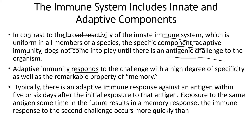Adaptive immunity responds to challenges with a high degree of specificity as well as the remarkable property of memory. When an antigen and antibody combine, it leads to the activation of B cells and T cells along with the formation of memory cells. These memory cells are a key part of the immune response and I'll be discussing them further in the next video.